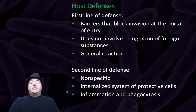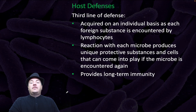Regarding host defenses, the first line of defense is barriers that block invasion at the portal of entry. It does not involve recognition of foreign substances and is general in its action. The second line of defense is also nonspecific; its internalized system of protective cells involves inflammation and phagocytosis. The third line of defense is acquired on an individual basis as each foreign substance is encountered by lymphocytes. Reaction with each microbe produces unique protective substances and cells that can come into play if the microbe is encountered again, and this provides long-term immunity.